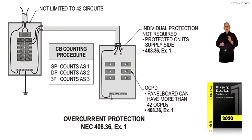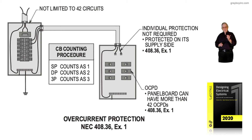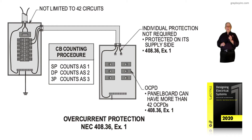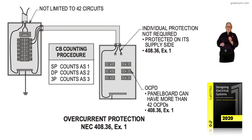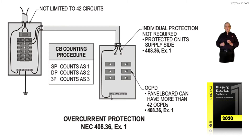Individual protection is not required on the panel to your right because the main in the service equipment protects the conductors and protects the bus bar in the panel. Notice the panel board can have more than 42 circuits if we're applying Exception 1 to 408.36.